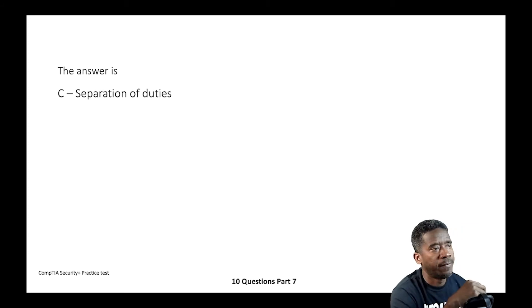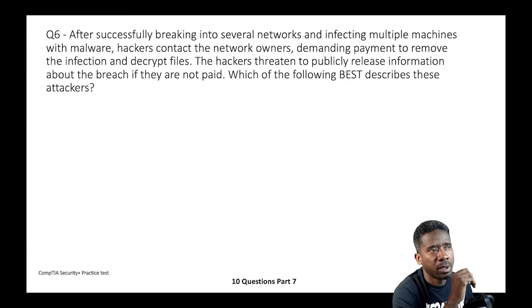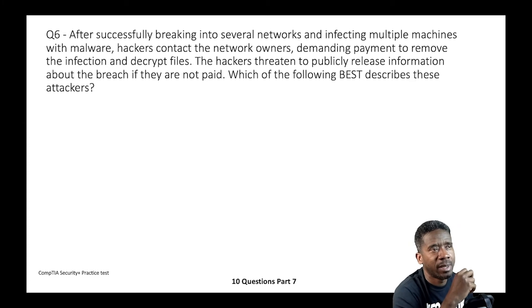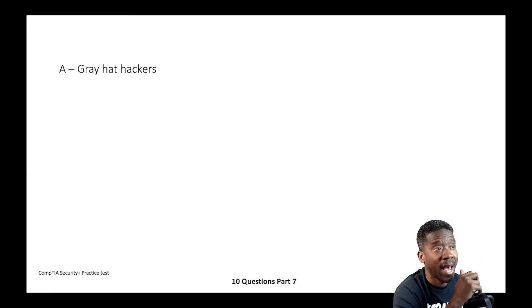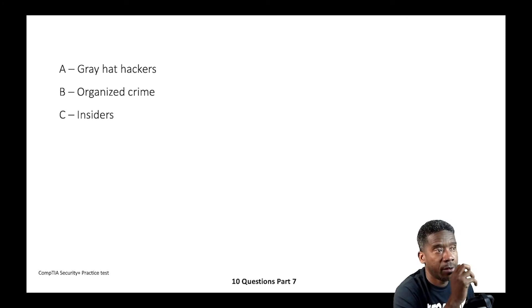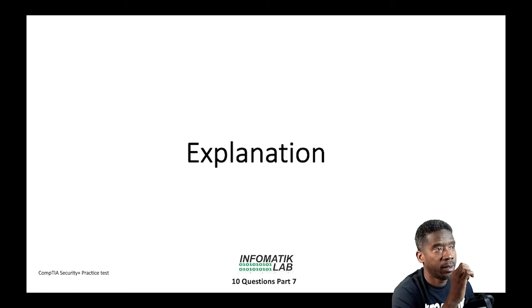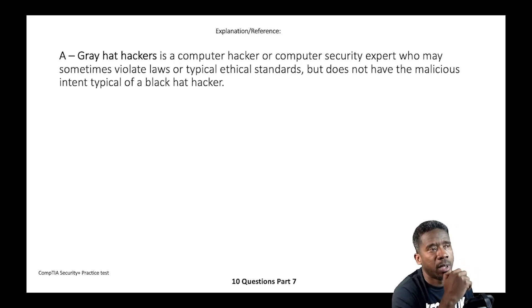Question six: After successfully breaking into several networks and infecting multiple machines with malware, hackers contact network owners demanding payment to remove the infection and decrypt files, threatening to publicly release information about the breach if not paid. Which of the following describes these attackers? A) Gray hat hackers, B) Organized crime, C) Insiders, or D) Hacktivists.